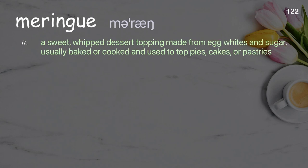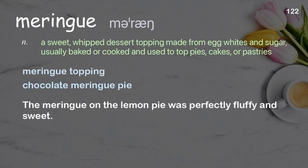Meringue: a sweet, whipped dessert topping made from egg whites and sugar, usually baked or cooked and used to top pies, cakes, or pastries. Examples: meringue topping, chocolate meringue pie. The meringue on the lemon pie was perfectly fluffy and sweet.